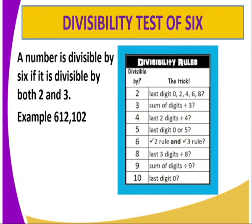We are going to have the first divisibility test on the test of 6. A number is divisible by 6 if it is divisible by both 2 and 3. For you to know if a number is divisible by 6, you should first ask yourself: is the number divisible by 2 or 3? And remember, here we are using the word AND — we are not using OR.